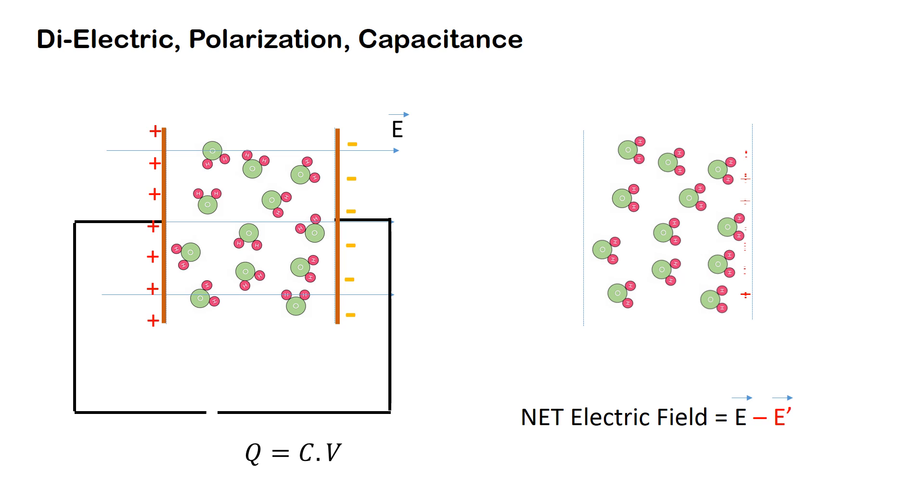This creates a small electric field within the dielectric, and its direction is in opposite to the electric field created in the capacitor by the battery. So the net electric field within the capacitor is now E minus E'.